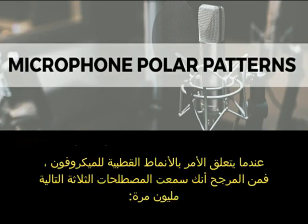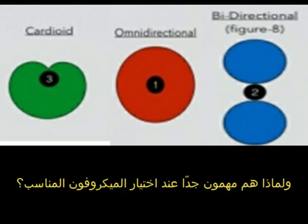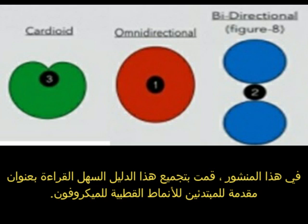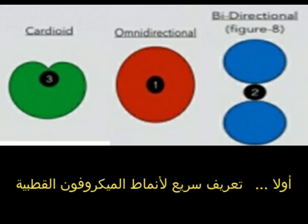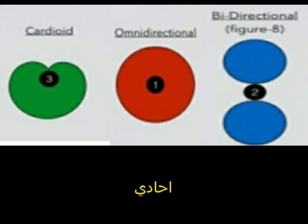When it comes to microphone polar patterns, you've most likely heard the following three terms: cardioid, omnidirectional, and figure eight. But what do they actually mean, and why are they so important when choosing the right mic? A microphone's polar pattern is the three-dimensional space surrounding the capsule where it is most sensitive to sound. The three basic patterns are omnidirectional, figure eight, and cardioid.